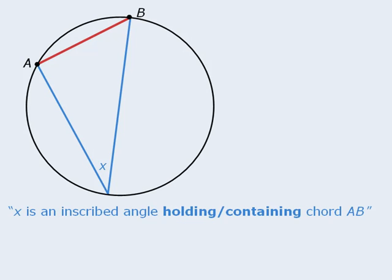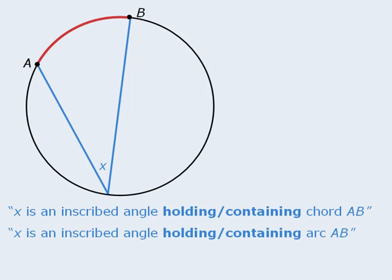Now please note that if we remove this chord, we can see that angle X is still holding arc AB. So we can say that angle X is an inscribed angle holding arc AB. If an inscribed angle is holding a chord, it is also holding an arc. So the properties that we examine in this lesson will pertain to both chords and arcs.